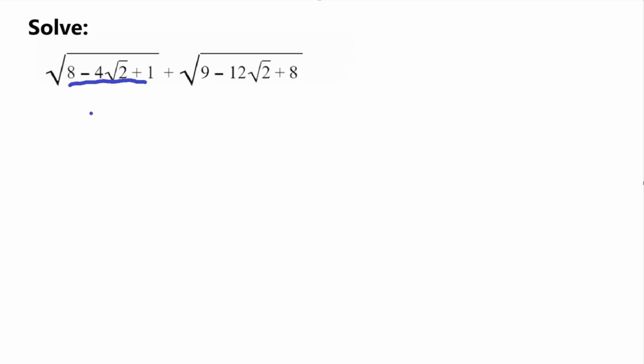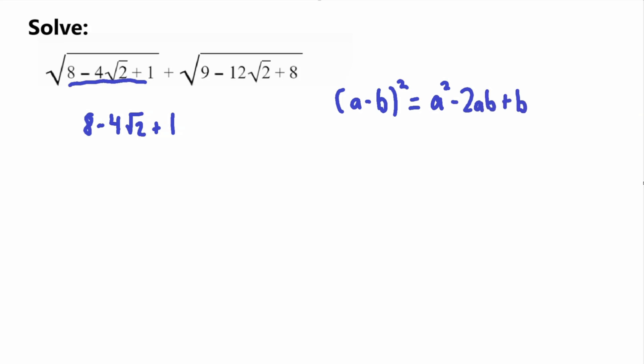The inside of the first square root is 8 minus 4 times square root of 2 plus 1. We want to get this into a form that is something squared. What comes to mind is the second binomial formula, where we have a minus b squared, which expands to a squared minus 2ab plus b squared.